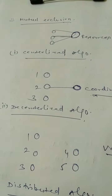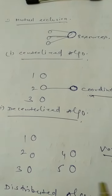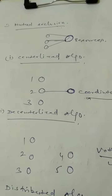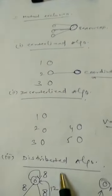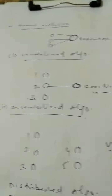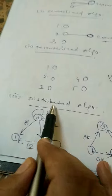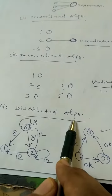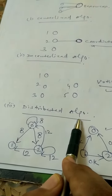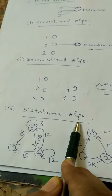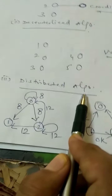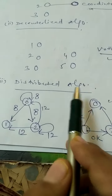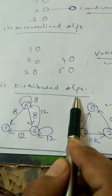We have previously discussed mutual exclusion algorithms like centralized, decentralized, and distributed. Now we want to focus on the distributed algorithm — specifically, how we can recognize the coordinator and which process becomes the coordinator.